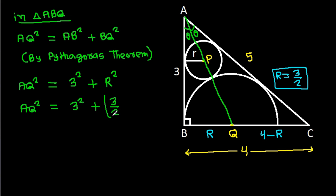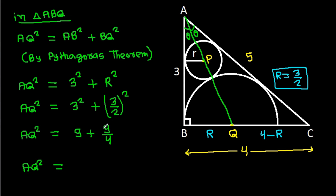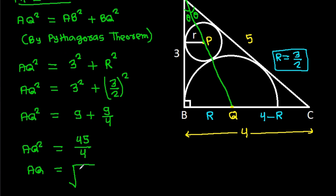Capital R is 3 over 2. Now in triangle ABQ, AQ squared equals AB squared plus BQ squared. AQ squared equals 3 squared plus R squared, where R is 3 over 2, squared. So AQ squared equals 9 plus 9 over 4, which equals 36 plus 9 over 4, giving 45 over 4. Therefore AQ equals root of 45 over 4, which is 3 root 5 over 2. So AQ is 3√5 over 2.